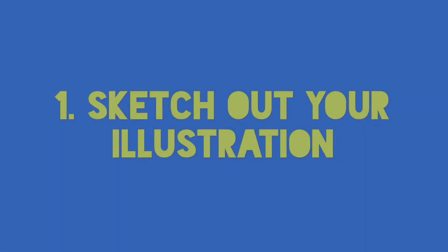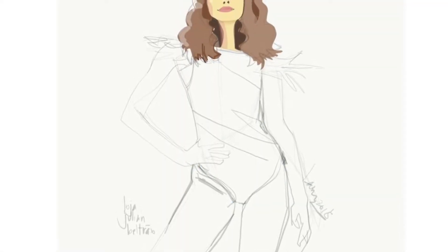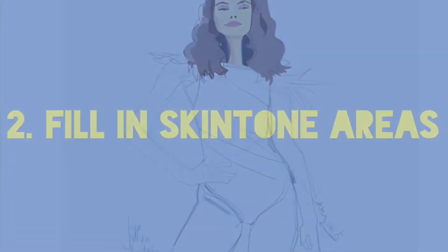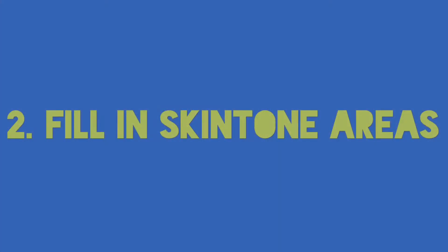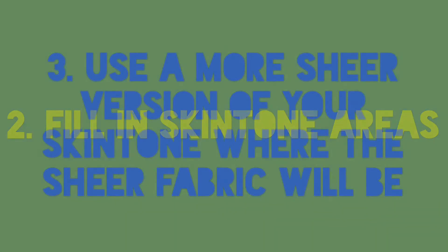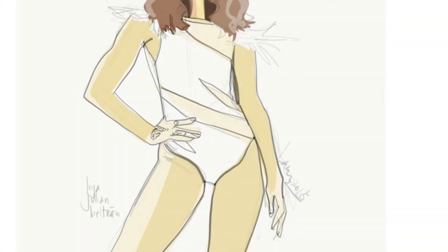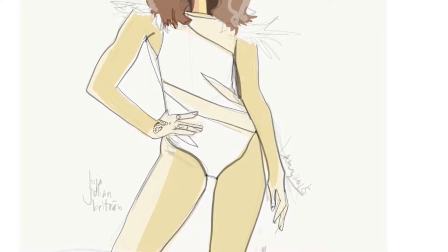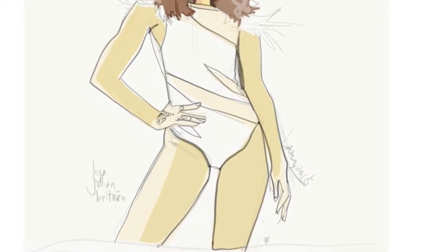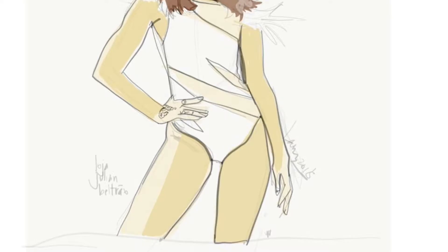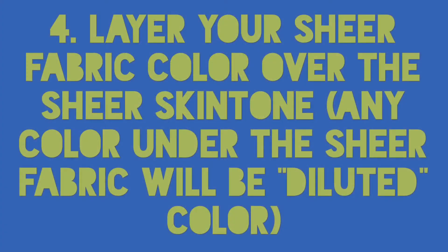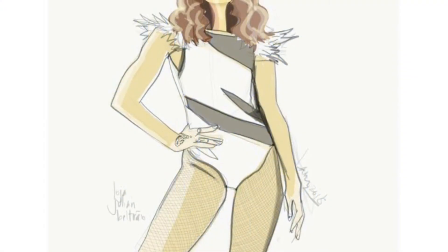When I'm working with sheers, I first sketch out my illustration in pencil — you can see here just a simple drawing. Then I fill in my skin tone on the model. I always do this first whether I'm working digitally or with gouache. In the inset parts I used a more sheer version of the skin tone, so you can see that it's lighter, and then you layer your sheer fabric color over the sheer skin tone.